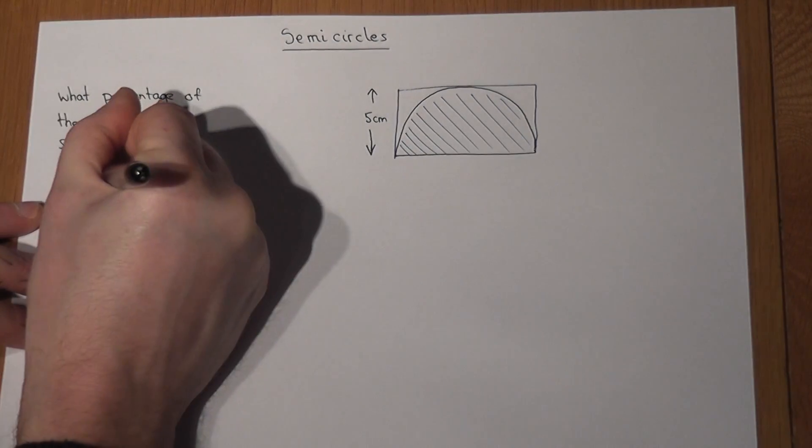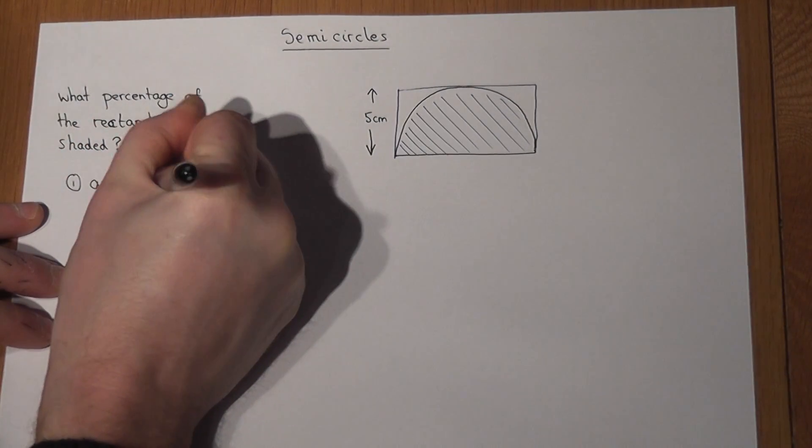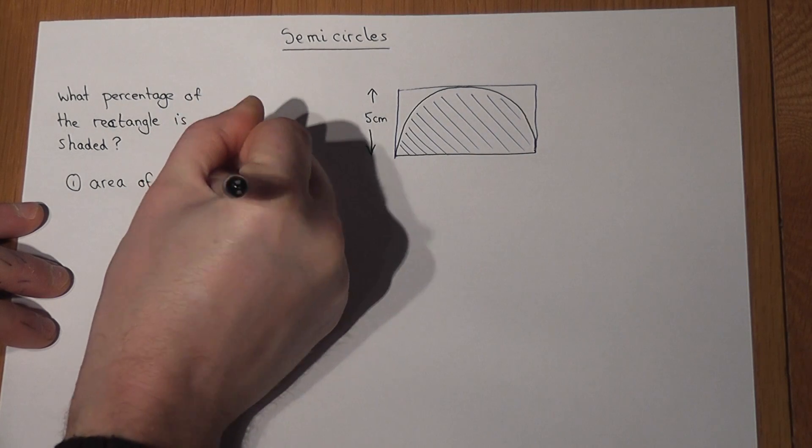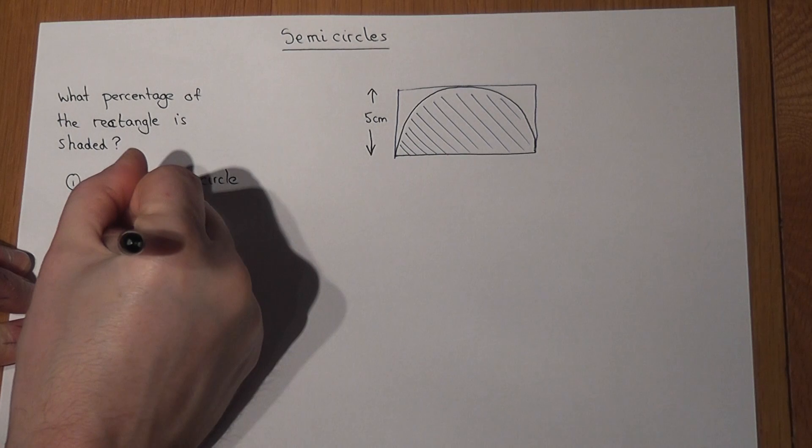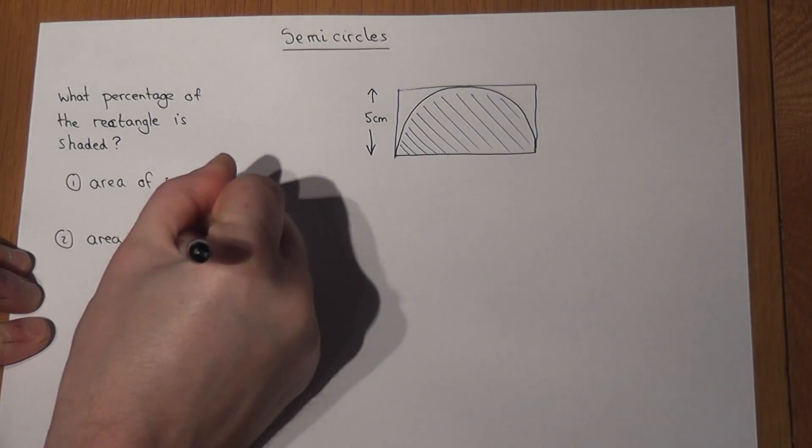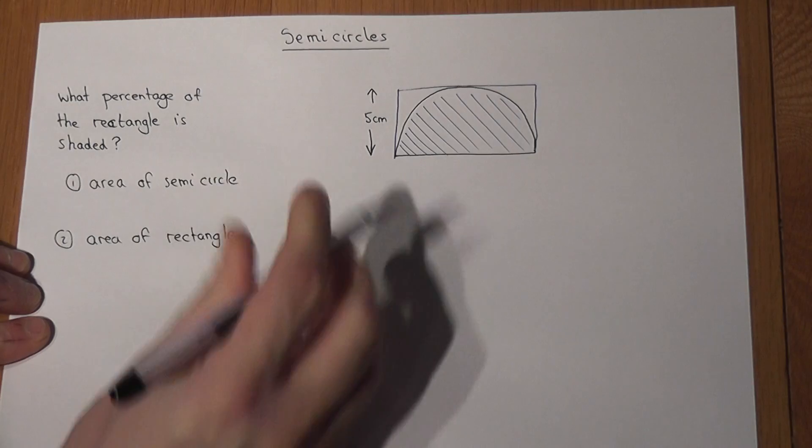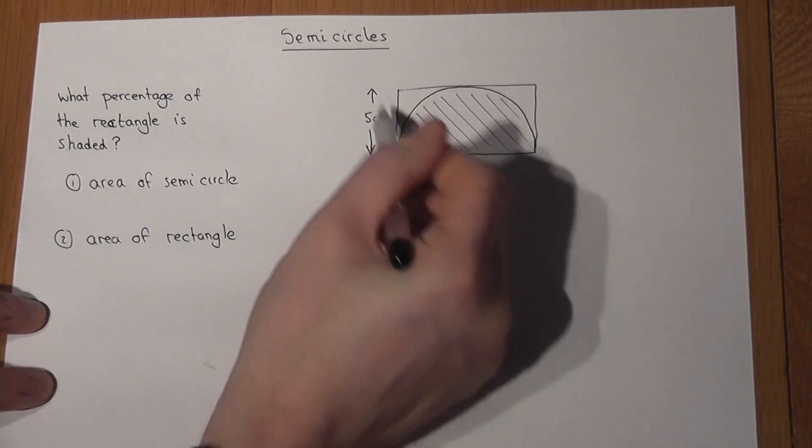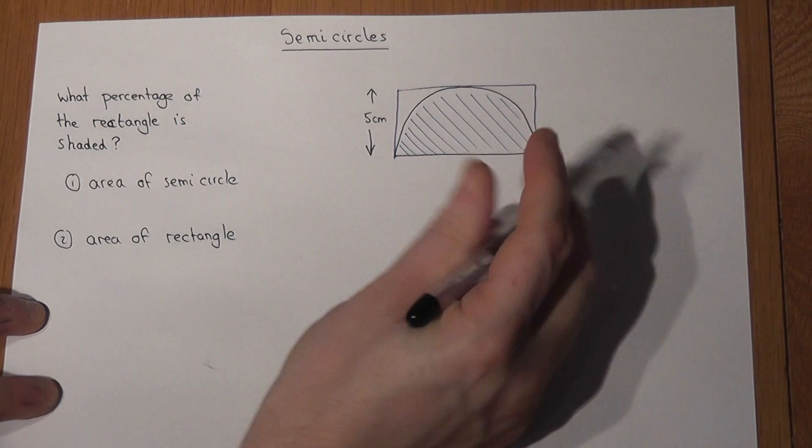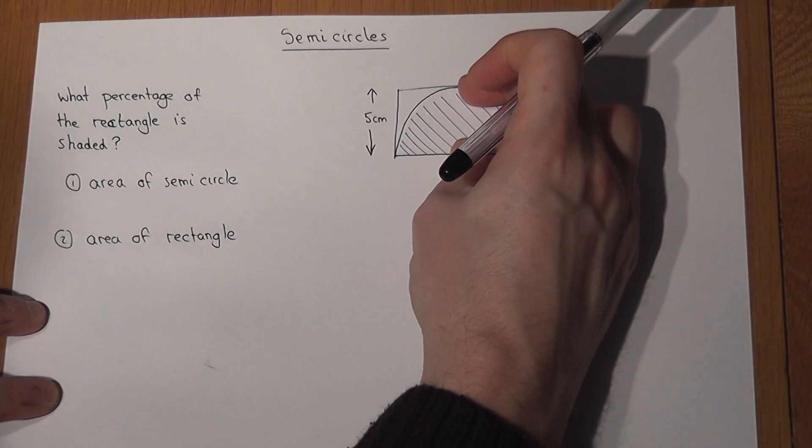To do this we've got to find two things out. One is the area of the semicircle, and secondly is the area of the rectangle. Now we've been told that this length here is 5, so the height of the semicircle is 5.